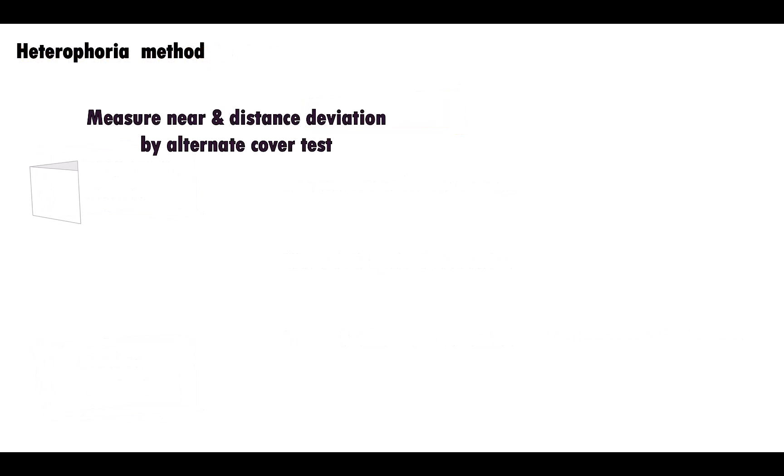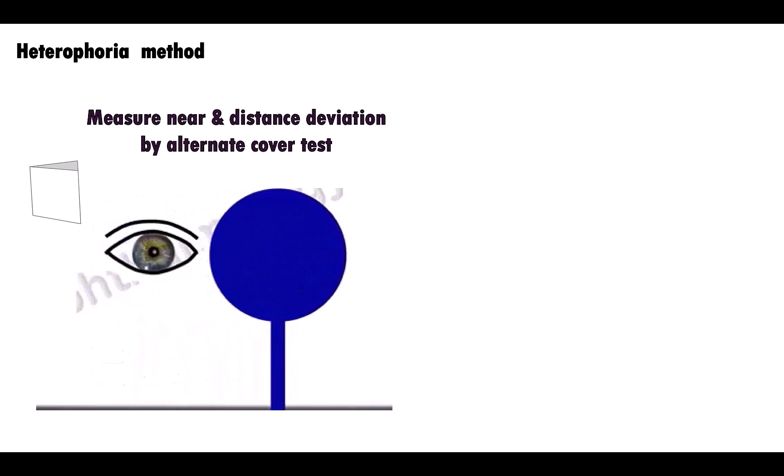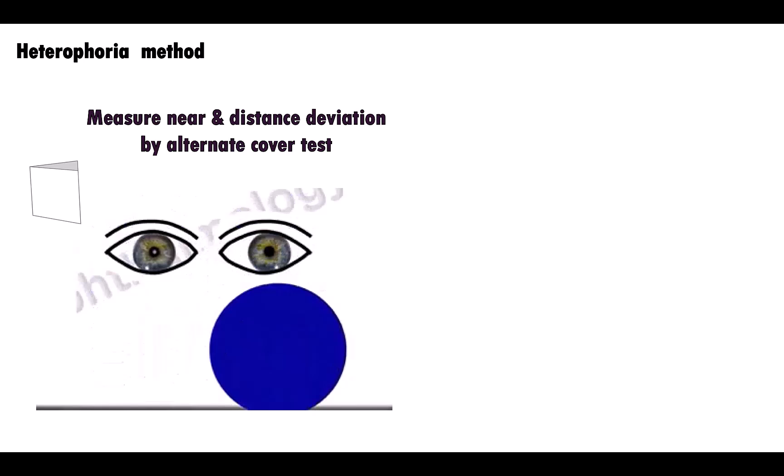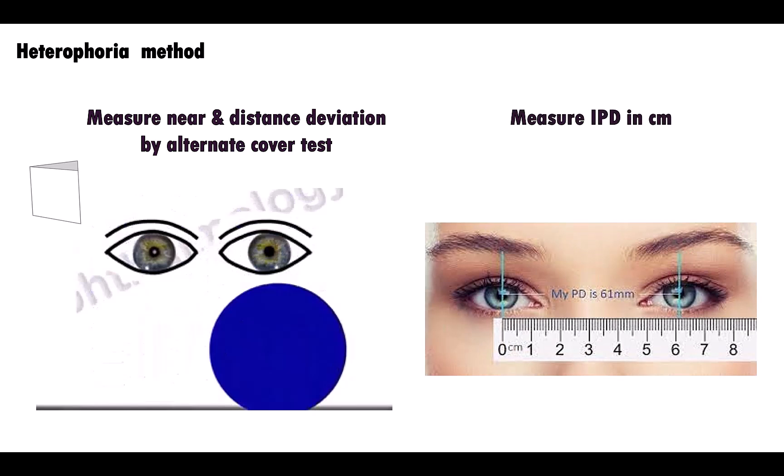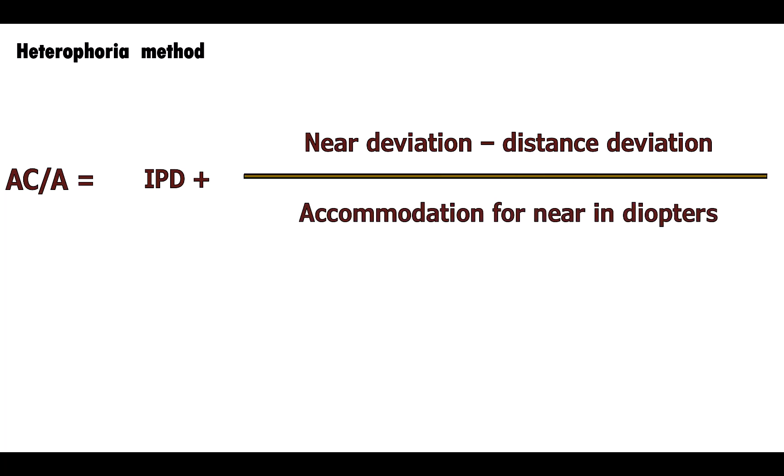First, the heterophoria method. The near and distance deviations are measured by the prism and alternate cover test. Next, the interpupillary distance is measured in centimeters. The AC/A ratio is then calculated using the formula: IPD plus near deviation minus distance deviation, divided by accommodation for near in diopters.